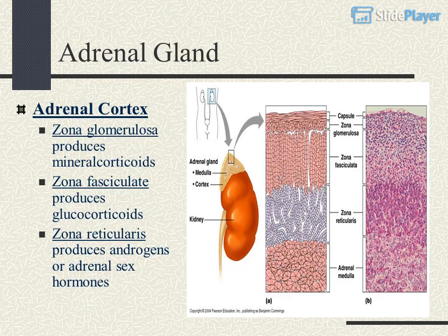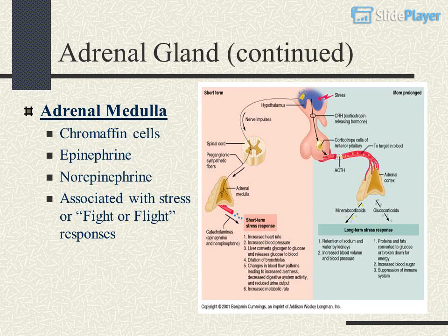Adrenal gland produces hormones including adrenal sex hormones. The adrenal medulla contains chromaffin cells that secrete epinephrine and norepinephrine, which are associated with stress or fight-or-flight responses.